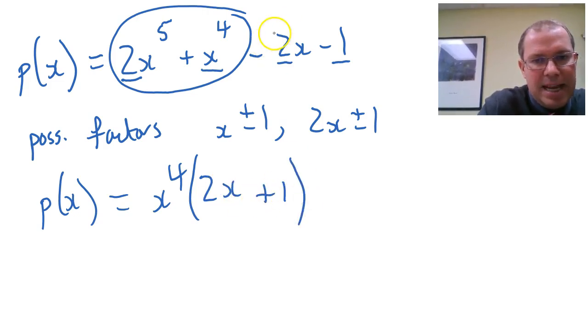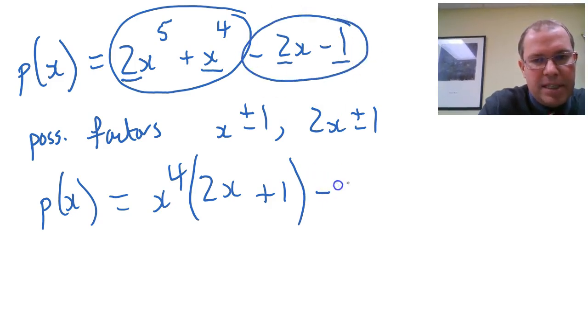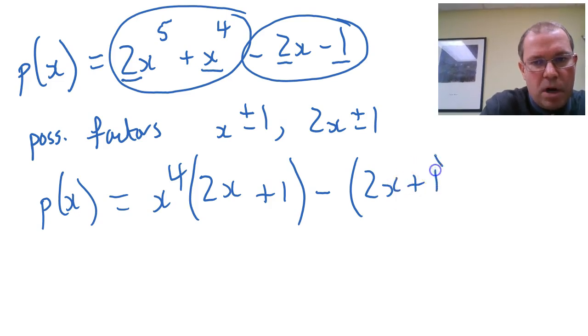And then I'm going to take a negative 1 out of the next two terms. And if I take a negative 1 out of the next two terms, I get 2x plus 1.